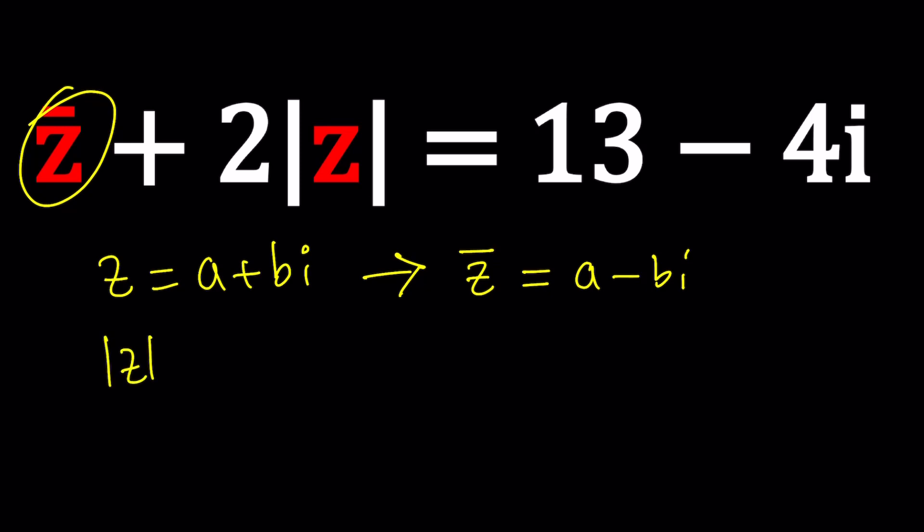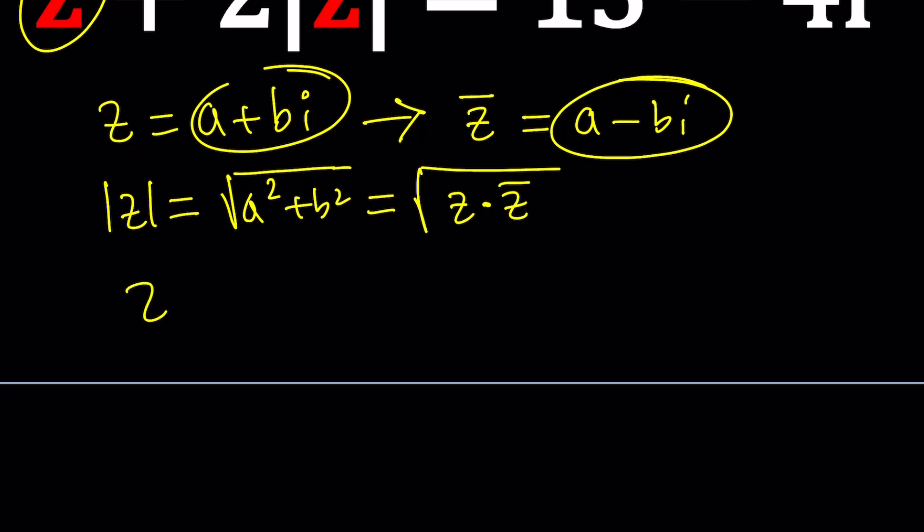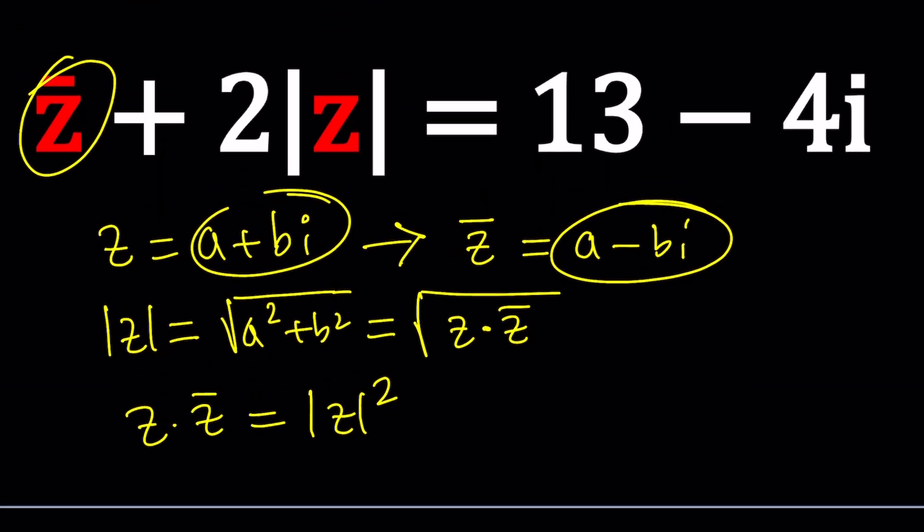What is the absolute value? There's a really nice identity which may or may not help you for this problem. The absolute value of z is the square root of a squared plus b squared if z can be written as a plus bi. But at the same time, it's also equal to the square root of z times z bar. Because if you multiply z times z bar, you get a squared plus b squared. It's actually better if you write it as z times z bar gives you the absolute value of z squared.